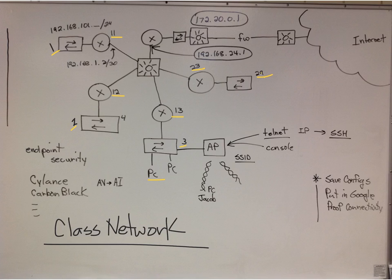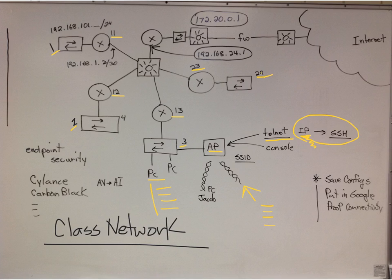Key things: you have to configure a PC correctly — IP address, mask, default gateway, and DNS. One group got an access point running and was able to connect by configuring a PC correctly. We talked about connecting into the AP; you can telnet to it or use secure shell, but you'd need an IP address in there. Or you could console in by connecting directly to it and consoling in with the correct settings for the access point.